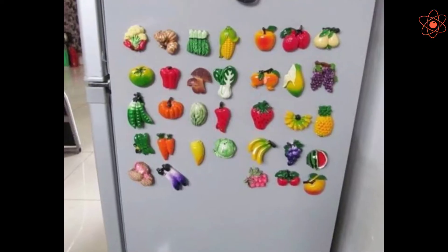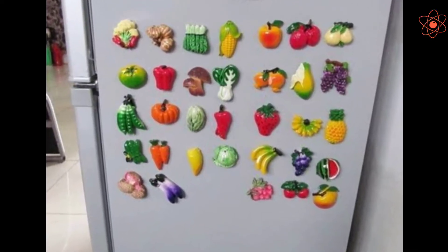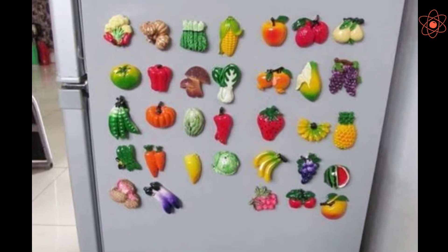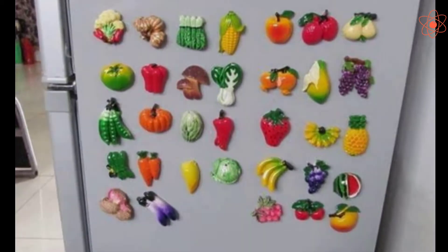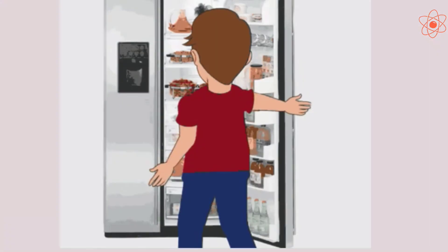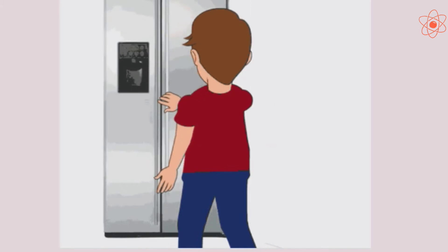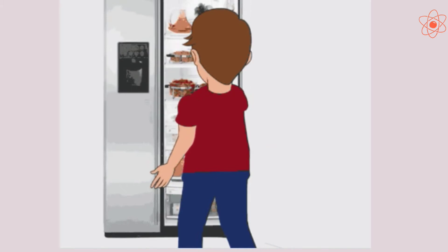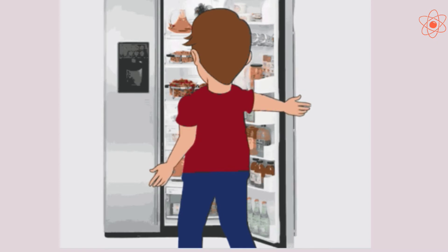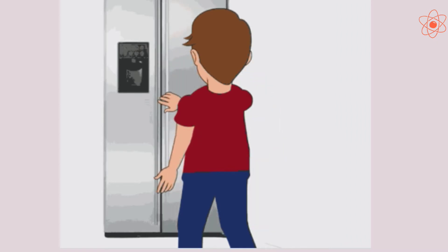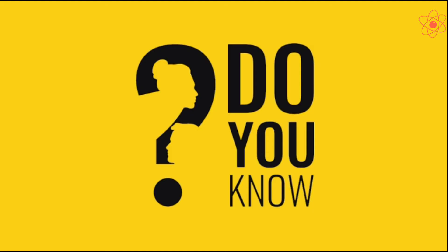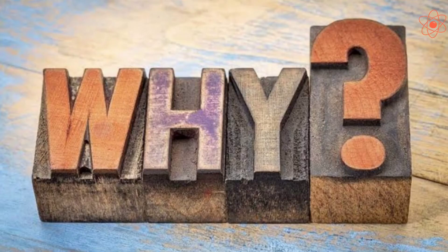You may have wondered how magnetic stickers remain attached to the door of the refrigerator. You may have also noticed that the door of a refrigerator gets closed automatically when the door is left slightly open. Do you know why this happens?